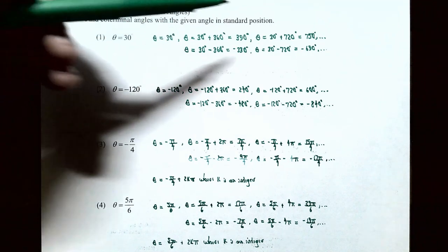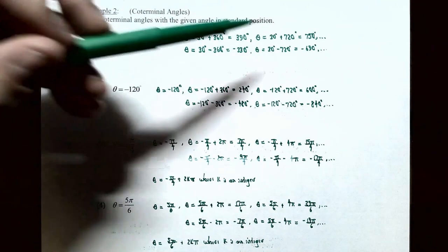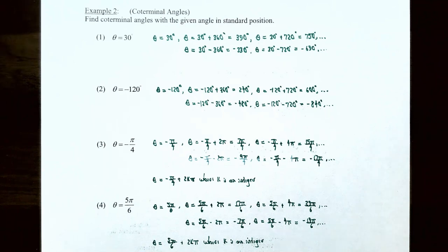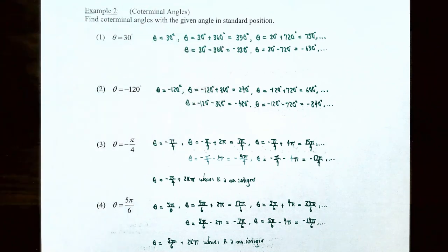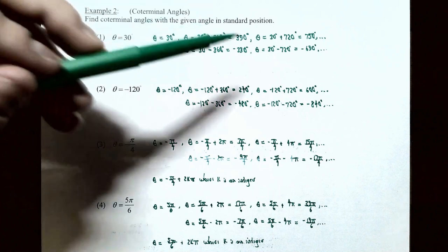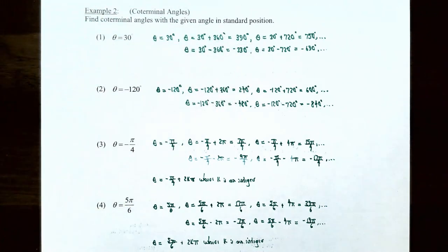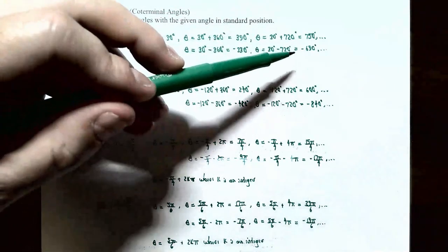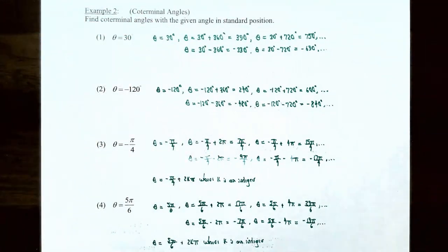Going clockwise one complete turn gives 30 minus 360 equals negative 330 degrees, which is coterminal with 30 degrees. Subtracting two clockwise revolutions gives 30 minus 720 equals negative 690 degrees, also coterminal with 30 degrees. Number two: theta is negative 120 degrees. Adding one revolution gives negative 120 plus 360 equals 240 degrees; adding two revolutions gives negative 120 plus 720 equals 600 degrees.